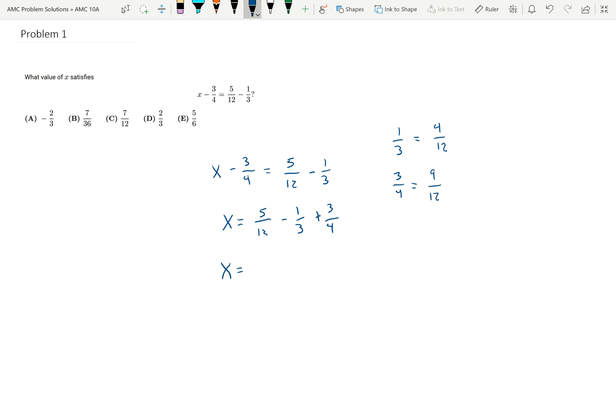I can rewrite this as 5 twelfths minus 4 twelfths plus 9 twelfths. And if I add those fractions up, I get x is equal to 10 twelfths.